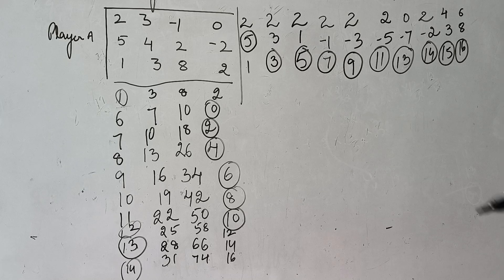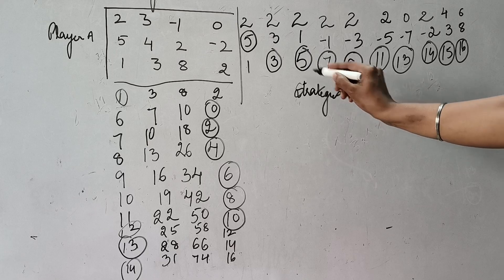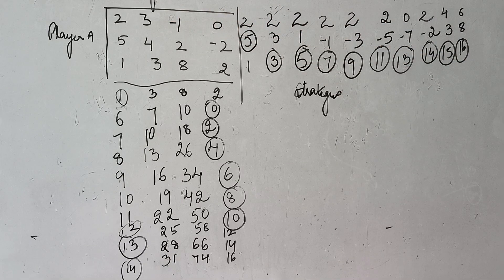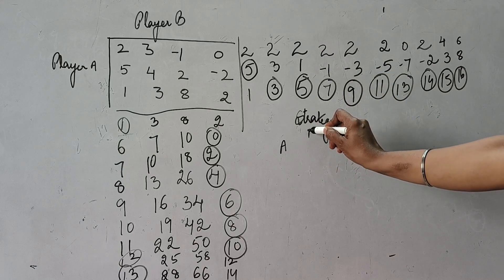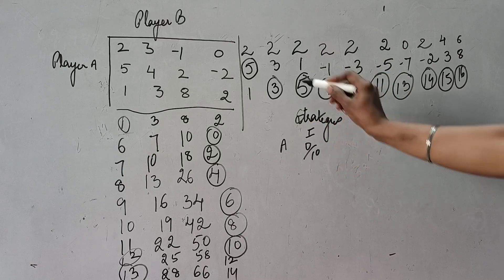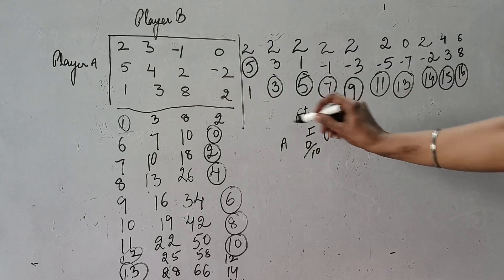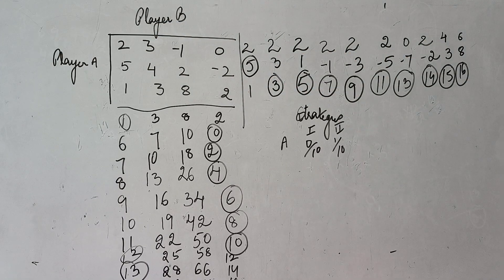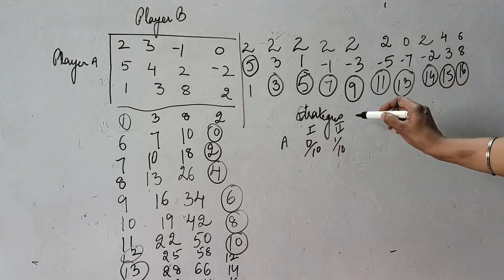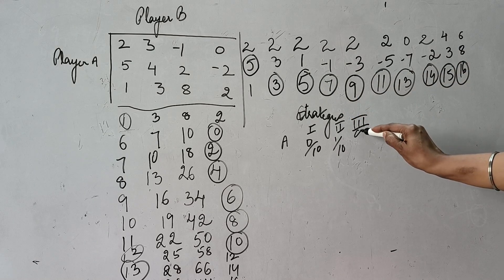First, write the approximate value of strategies. The probability that player A will choose the first strategy: count the circles in the first row — there are none — so it is 0/10. Probability player A chooses the second strategy: there is 1 circle, so it is 1/10. Probability player A chooses the third strategy: count the circles — 1, 2, 3, 4, 5, 6, 7, 8, 9 — so it is 9/10.